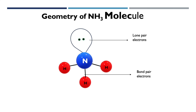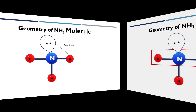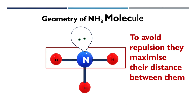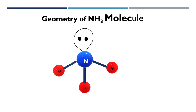According to valence electron pair repulsion theory, the shape of a molecule depends upon the number of valence electron pairs around the central atom. The electron pairs in the valence shell repel each other due to being negatively charged, and to minimize the repulsion, they try to maximize the distance between them.